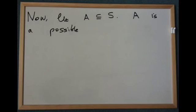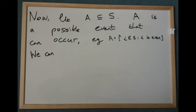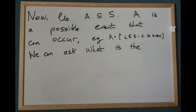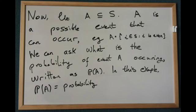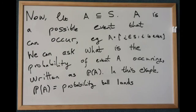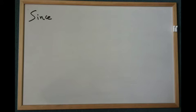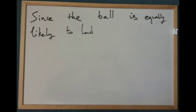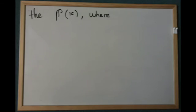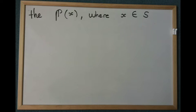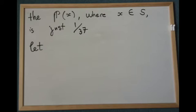Now let A be a subset of S. A is a possible event that can occur. For example, A could be the set of elements i of S such that i is even. We can ask what is the probability of event A occurring, written as P(A). Since the ball is equally likely to land on any number on the wheel, the probability of x occurring, where x is an element of S, is just 1 over 37.